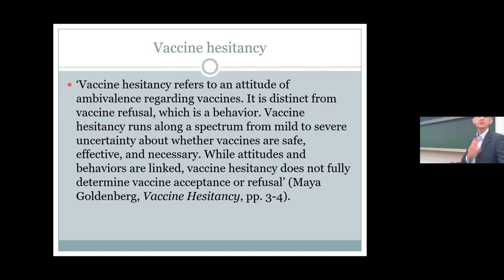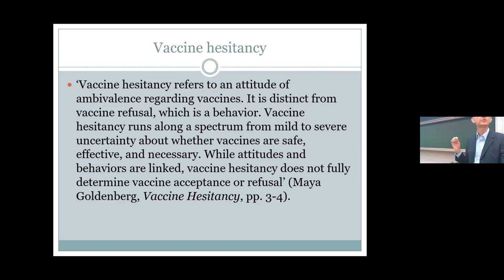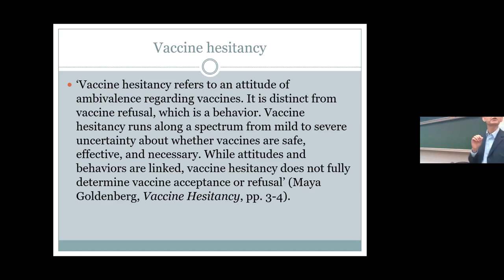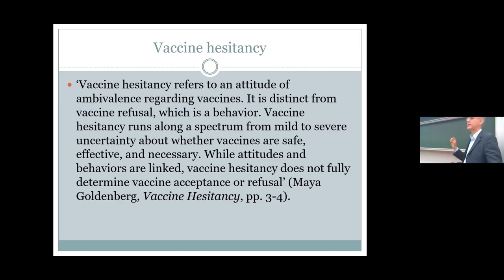Two key points here: first, Goldenberg understands hesitancy as running along a spectrum — mild to severe. Second, she distinguishes between hesitancy, which she takes to be an attitude, and refusal, which she takes to be a behavior.